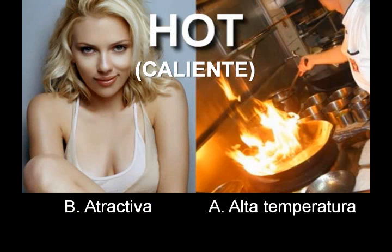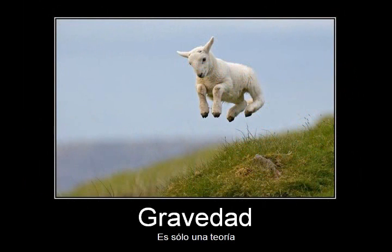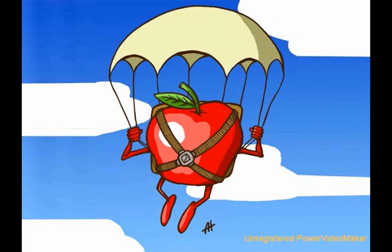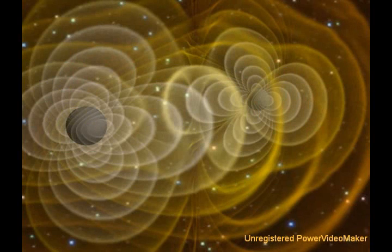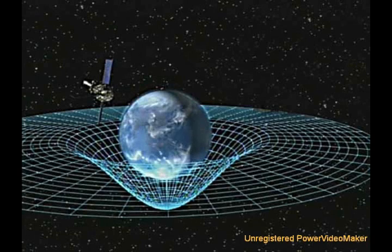If you're a bit confused as to how something can be both a theory and a fact, remember that words can have more than one meaning. Just like evolution, the word gravity is both theory and fact. It is a fact that objects fall — objects with mass gravitate towards one another, and that has been directly observed. The theory of gravity seeks to explain why objects with mass attract one another. Currently, Einstein's theory of general relativity, which proposes that objects with mass warp the fabric of space-time, is the best explanation we have for all the observed facts.